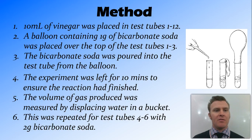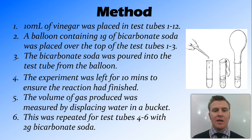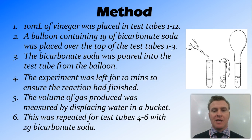Here's an example of a method. You can see that it's all in past tense — so it's not 'place 10 mils of vinegar' like a cookbook; it's '10 mils of vinegar was placed.' There is no pronoun, so it's not 'I placed 10 mils of vinegar.' We've also got specific amounts, for example, one gram of bicarb soda and leaving it for 10 minutes, as well as the things that are going to be measured — for example, the gas produced is measured by displacing water in a bucket — and it's in a clear set-out with numbered steps.